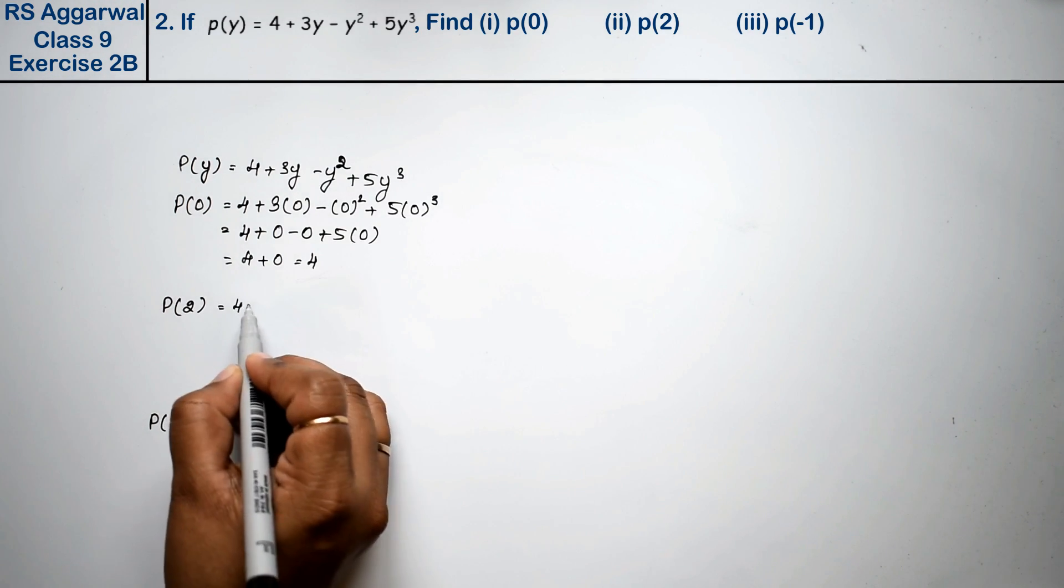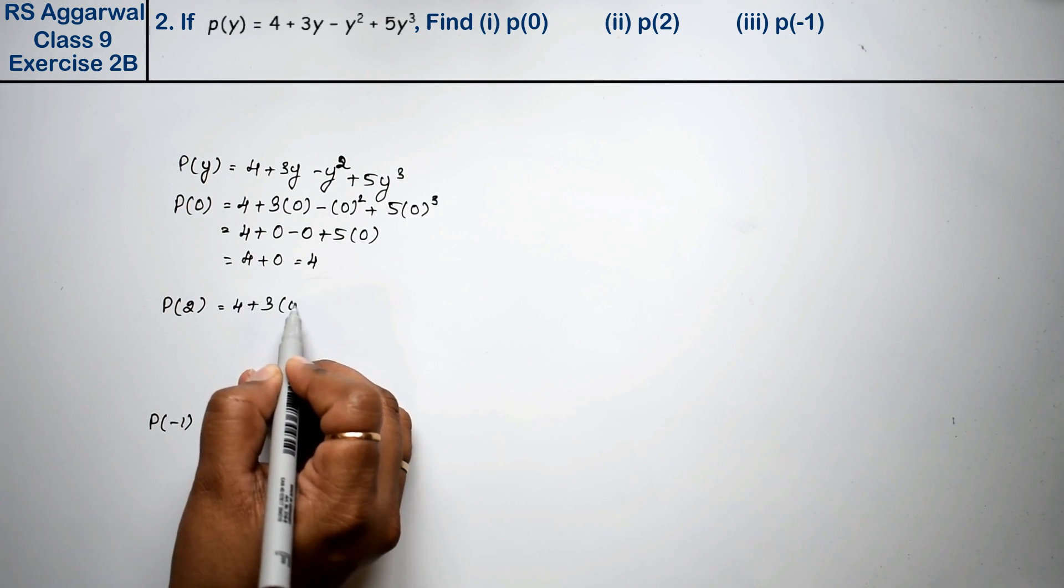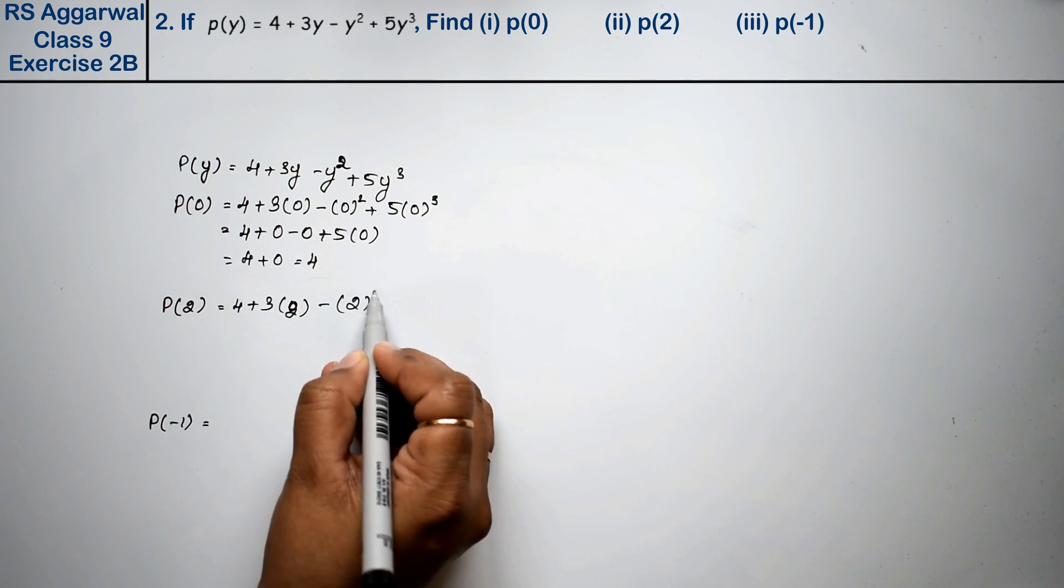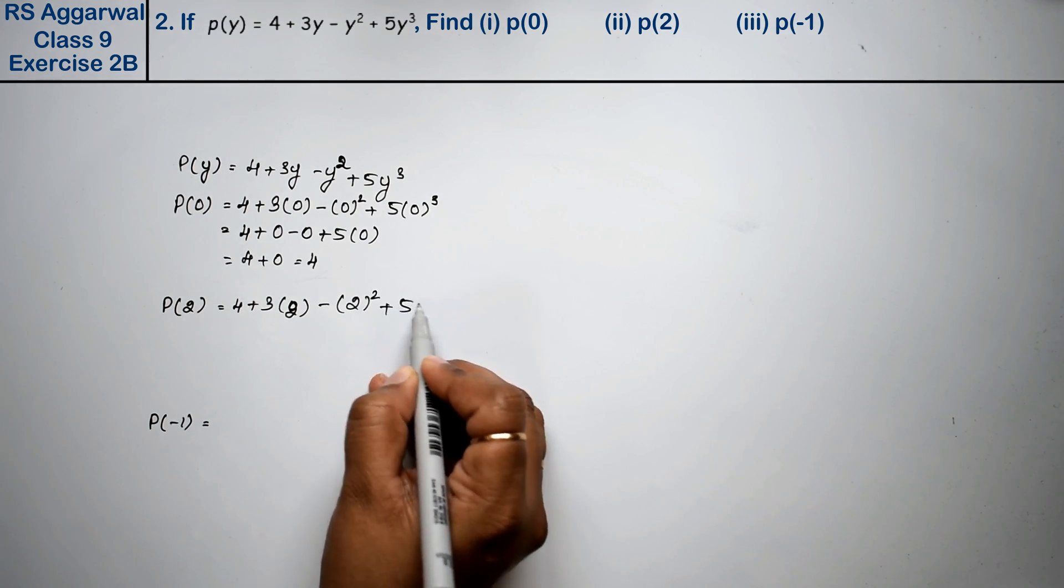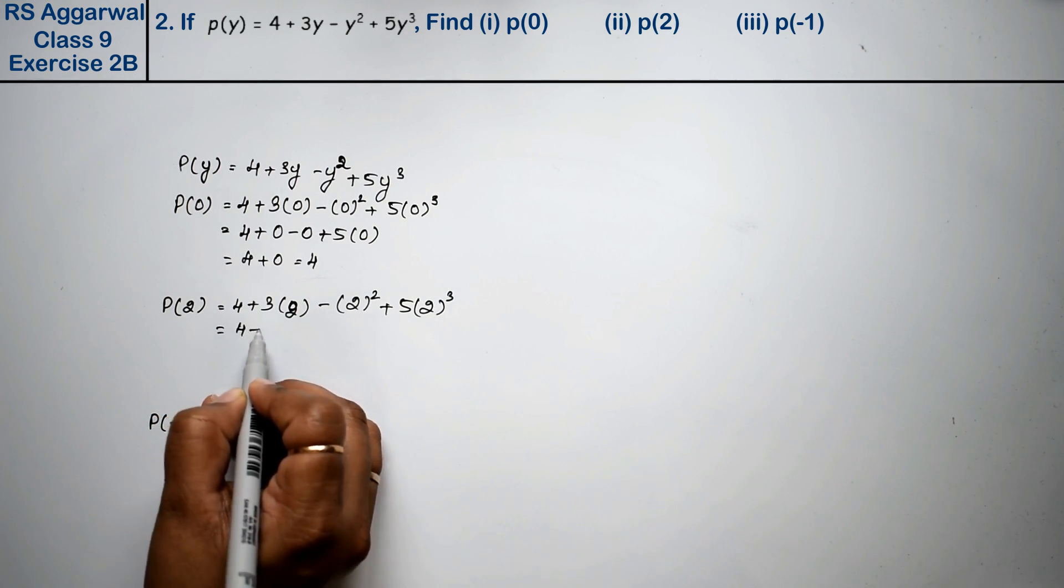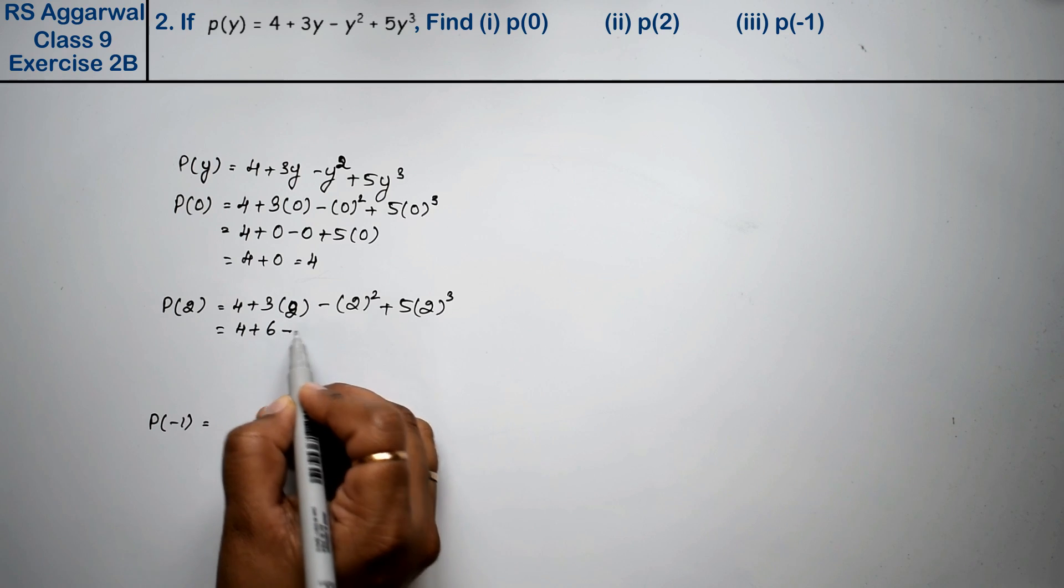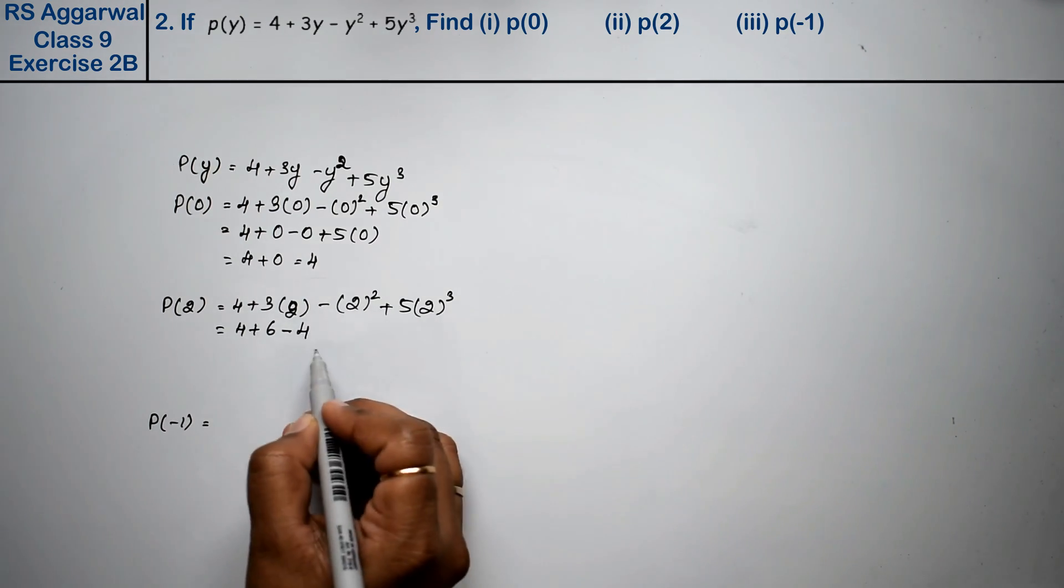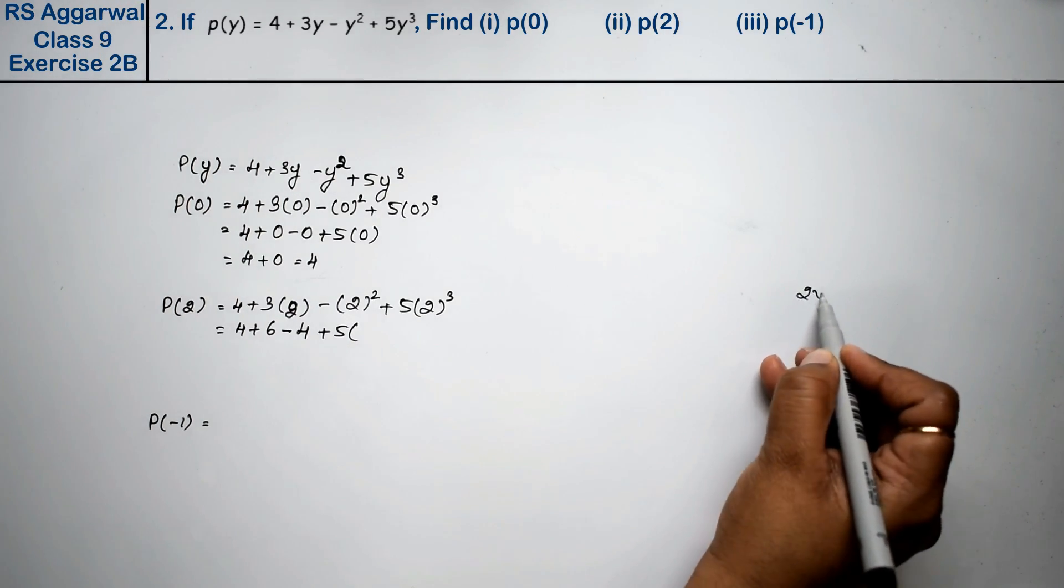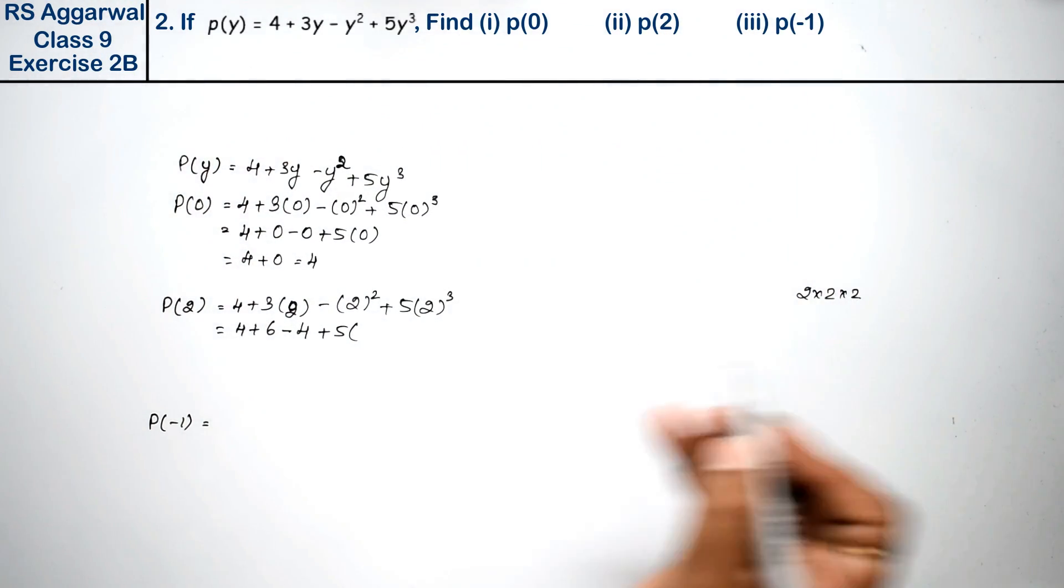Now p(2) we will put: 4 plus 3 into 2 minus 2 squared plus 5 into 2 cubed. So how much is it? 4 plus 6 minus 4 plus 5 into 8, because 2 cubed means 2 into 2 into 2, which is 8.